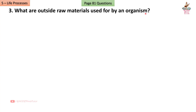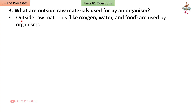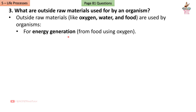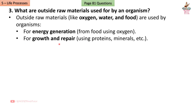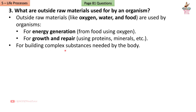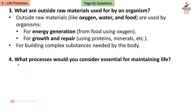Question 3: What are outside raw materials used for by an organism? Answer: Outside raw materials like oxygen, water, and food are used by organisms for energy generation from food using oxygen, for growth and repair using proteins, minerals, etc., and for building complex substances needed by the body.